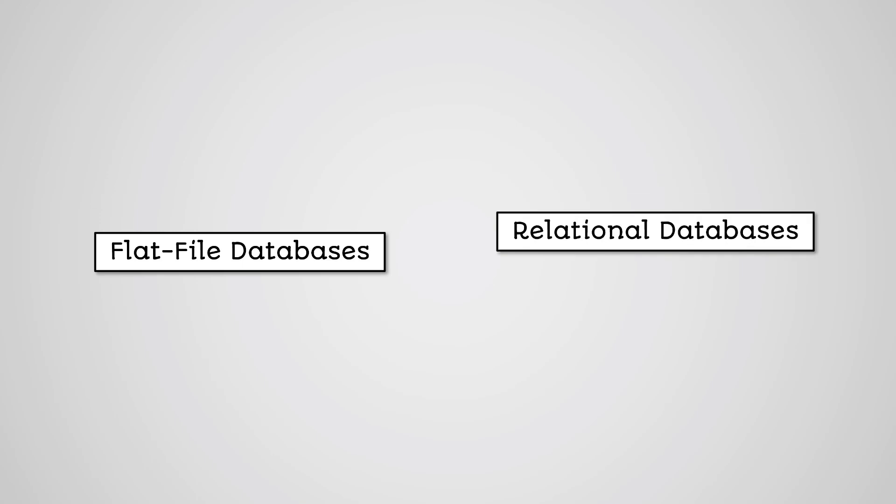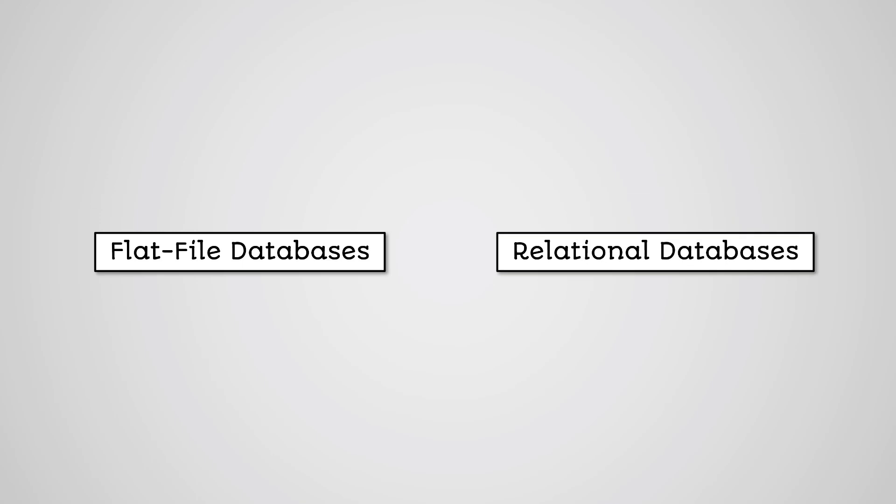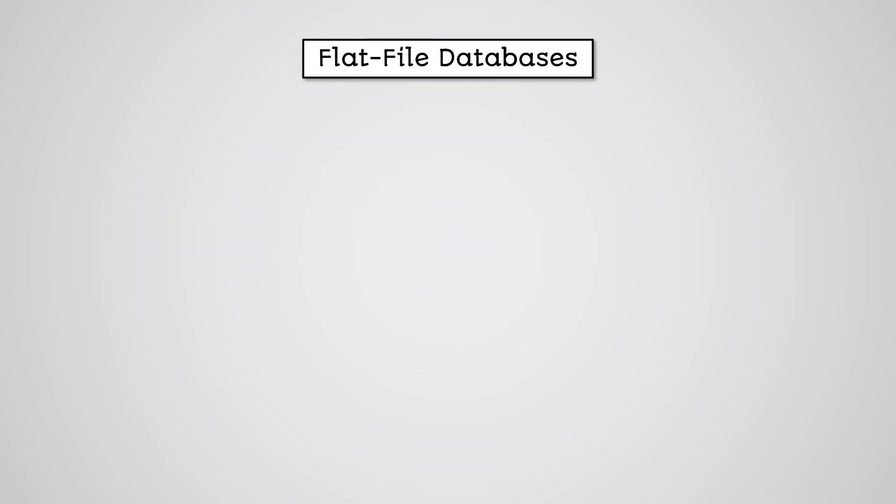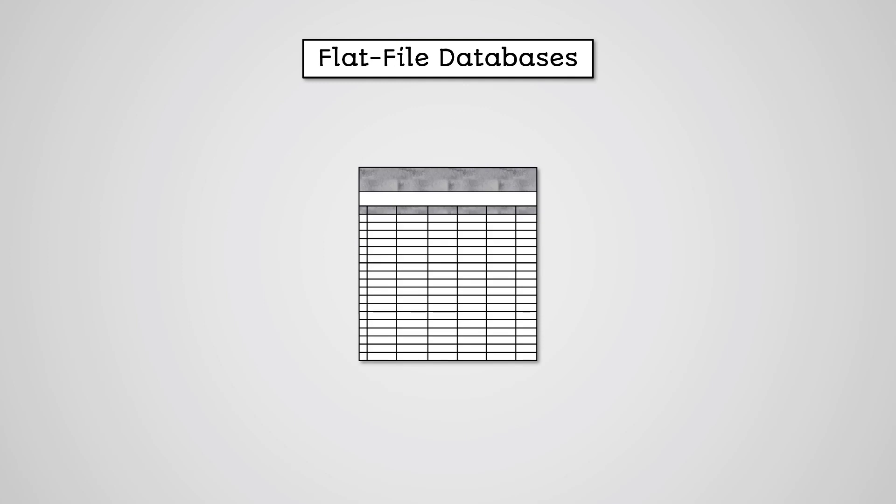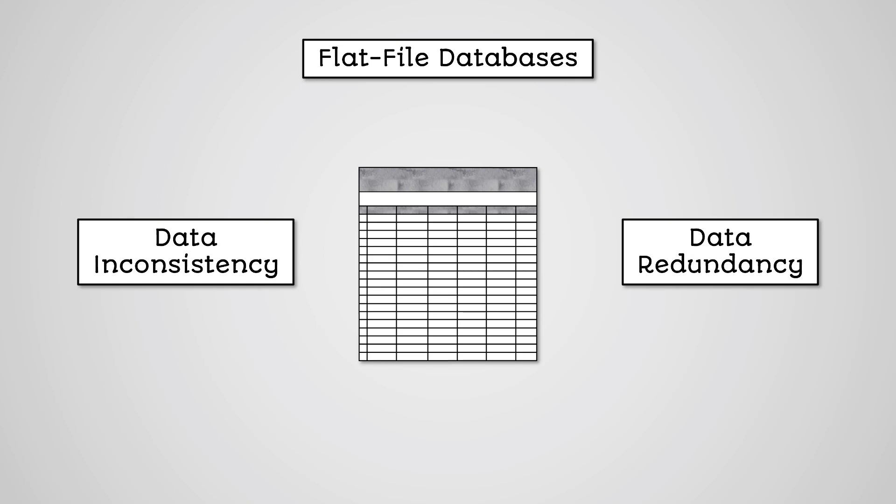When talking about types of databases, we often mean between flat file databases and relational databases. Flat file databases are where all data is stored in a single table. Storing data in a single table is very simple, but it causes all kinds of problems, most notably data inconsistency and data redundancy.